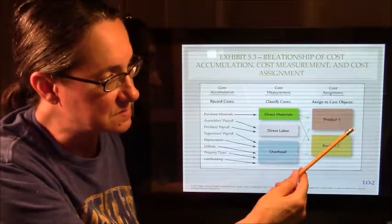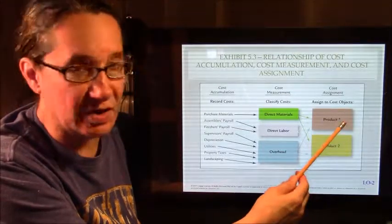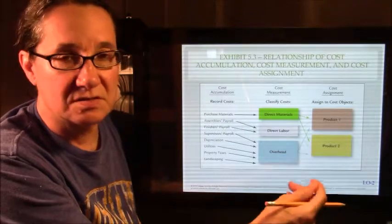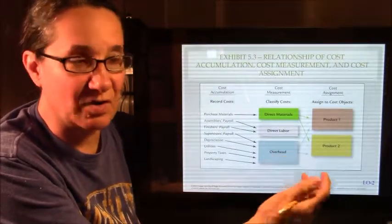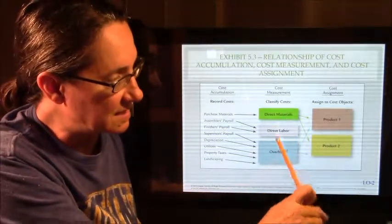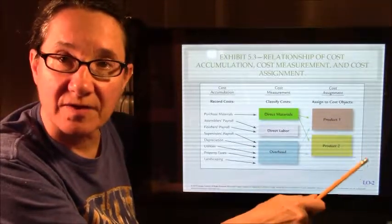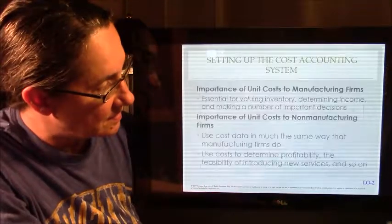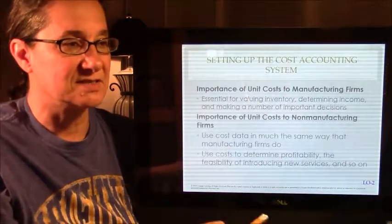And then we assign those costs to a cost object, like product one and product two. Maybe it's pencils and we're going to use process costing. Maybe it's picture frames and we're going to use job costing. But we have to assign these costs to our cost objects. So that's what we're doing. No big deal. Just costing stuff.